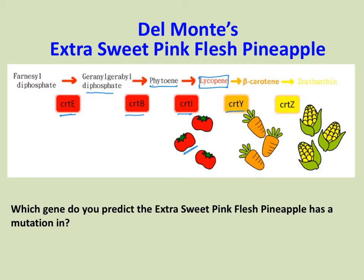However, with the addition of the enzyme CRTY, we can produce beta carotene, which tends to be more orange or yellow in color. Then CRTZ converts beta carotene into zeaxanthin, which is very common in corn. Which gene would you predict the extra sweet pink flesh pineapple has a mutation in? Well, pineapples are normally yellow, so you might imagine they get their color from beta carotene or zeaxanthin. If we caused a mutation in CRTY, that would mean a buildup of lycopene and a redder or pinker color — and that is one of the genetically engineered changes present in Del Monte's rosé pineapple.